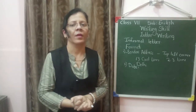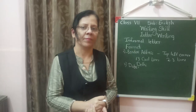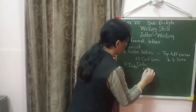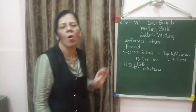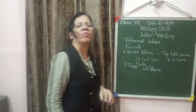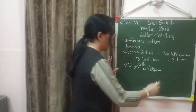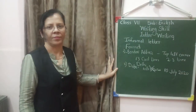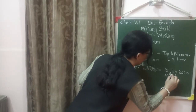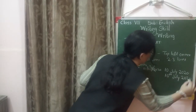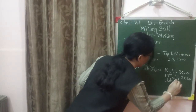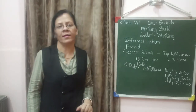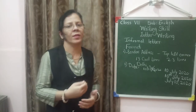The second element is the date. You cannot write the date as '10-7-2020' in numeric-only format — that is the wrong way. The correct ways to write the date are: 10th July 2020, or July 10, 2020. The date is written below the address after leaving one line.